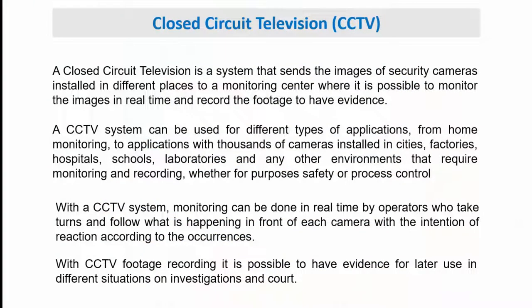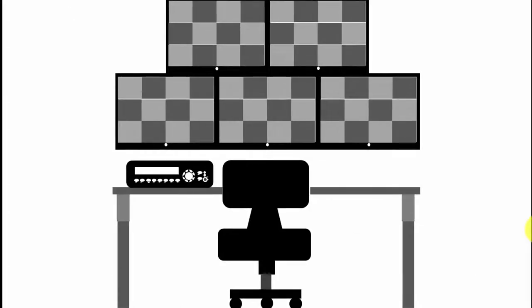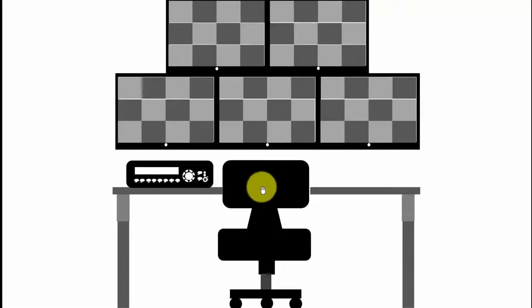Let's talk about closed-circuit television — CCTV systems. Basically, you have analog cameras sending video to a digital video recorder so you can record and watch videos live. Here I have a representation: there is a digital video recorder, also known as a DVR, and you can see monitors with images from the cameras. Every square represents a single camera that somebody can monitor live.